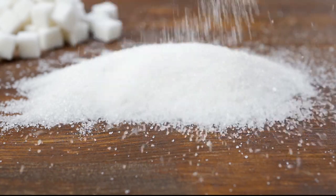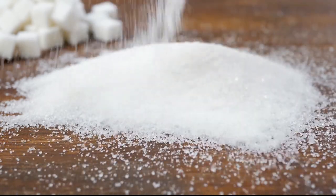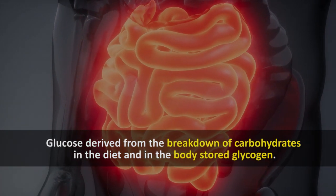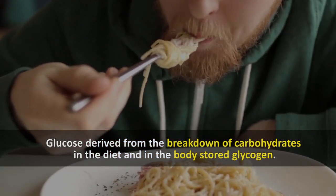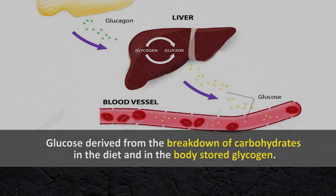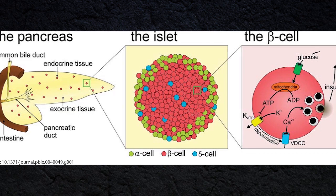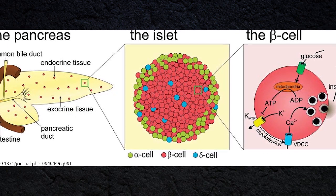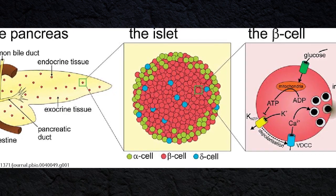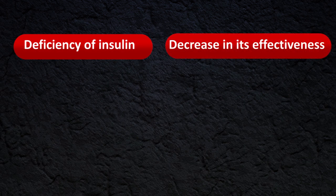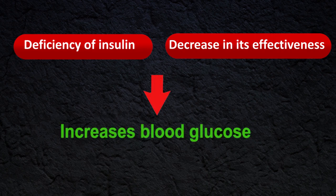Glucose is the primary and major source of energy in the human body. It is derived from breakdown of carbohydrates in the diet and from body-stored glycogen. Insulin secretion by islet cells in the pancreas facilitates glucose entry into cells. A deficiency of insulin or a decrease in its effectiveness increases blood glucose level.